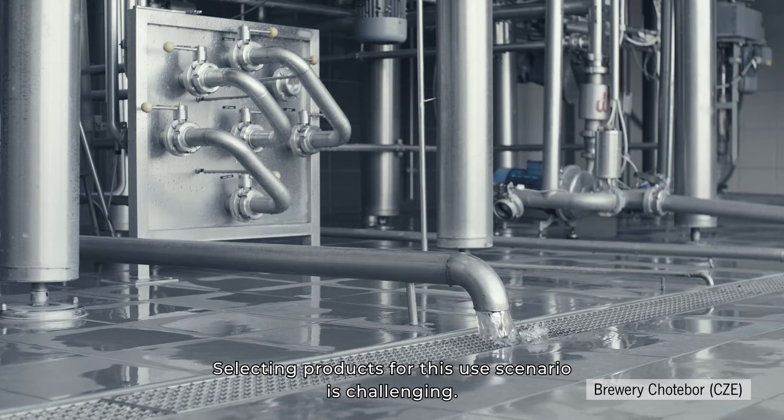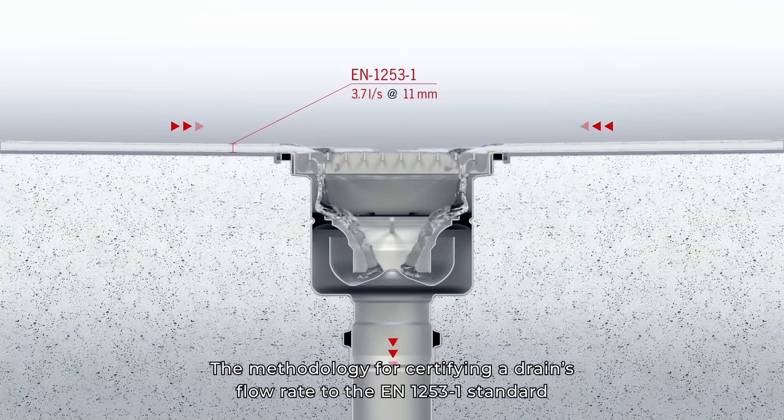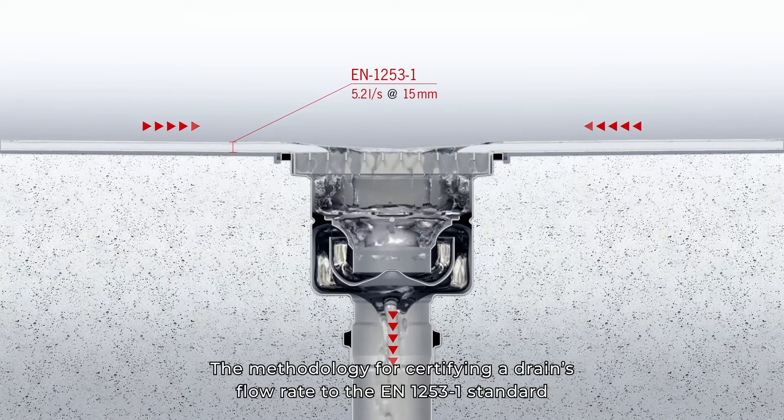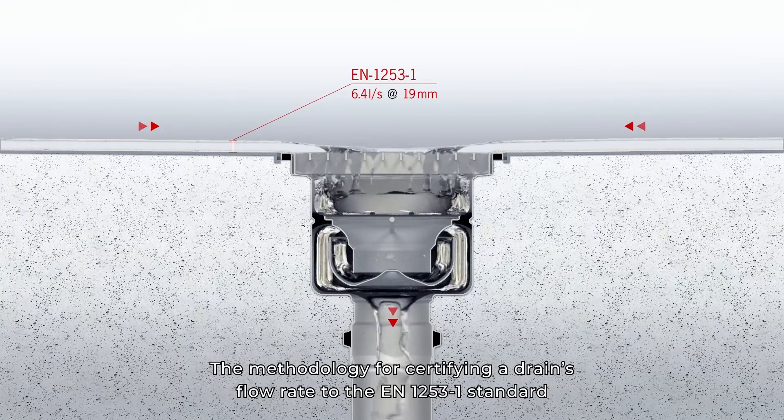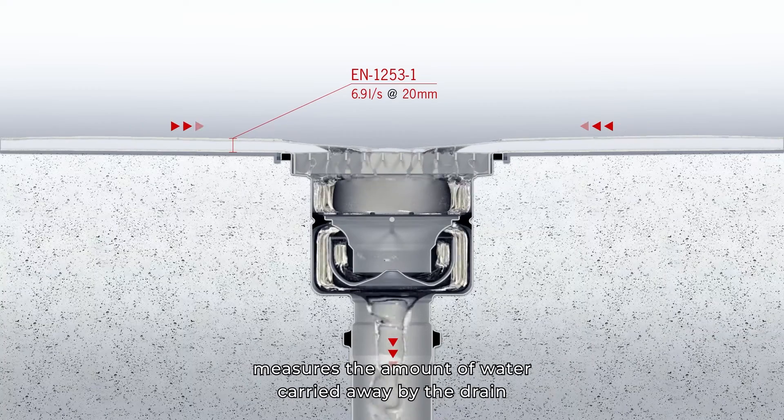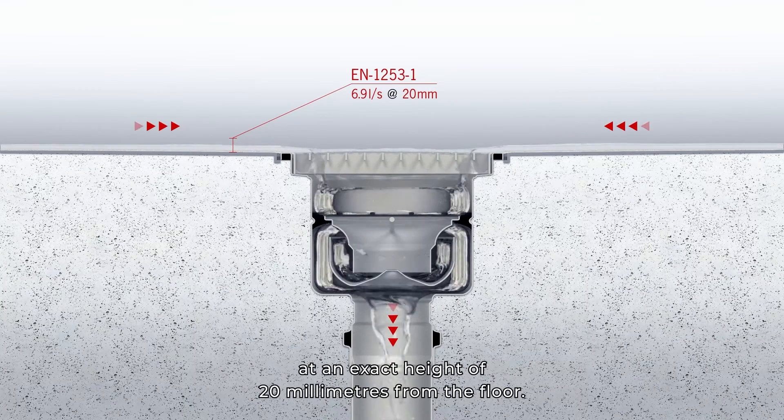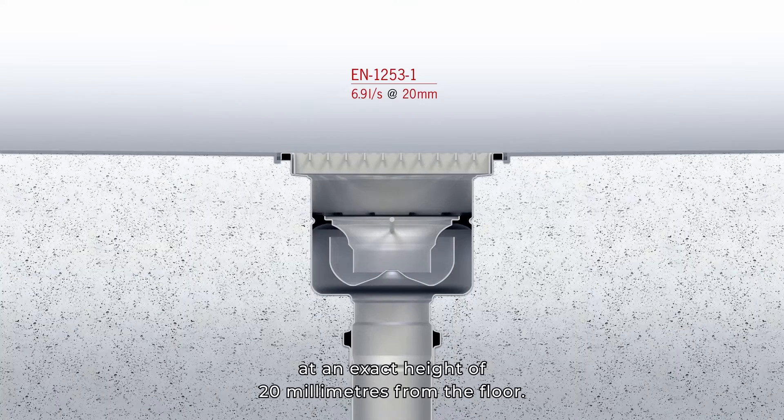Selecting products for this use scenario is challenging. Here's why. The methodology for certifying a drain's flow rate to the EN 1253-1 standard measures the amount of water carried away by the drain at an exact height of 20 millimeters from the floor.